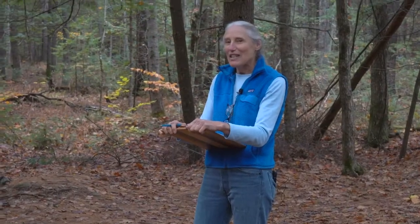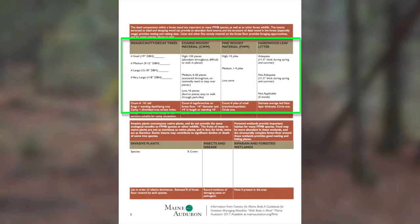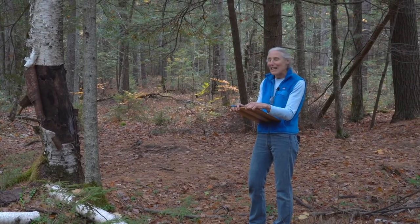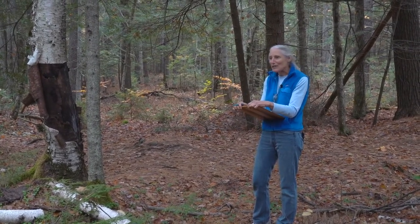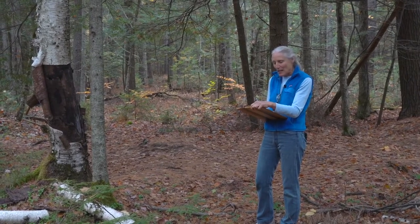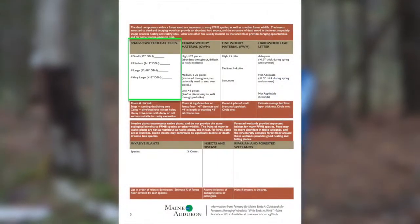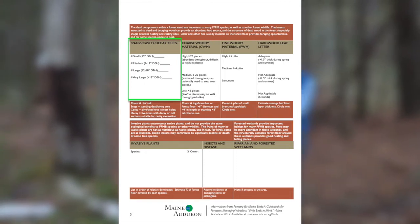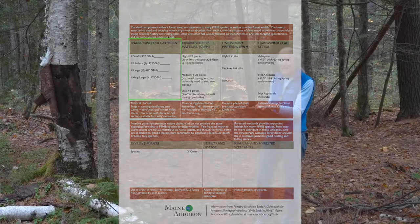We've finished with the live components of the forest and now we're moving on to the dead components, which are actually really important. The first thing we'll look at are snags or decaying trees. The goal is to have lots of dead standing snags because that's where woodpeckers, flying squirrels, raccoons, and all kinds of animals will nest or den. We look at small snags (less than 9 inches diameter), medium snags (9 to 12 inch), large snags (12 to 18 inch), and very large snags (over 18 inch diameter).